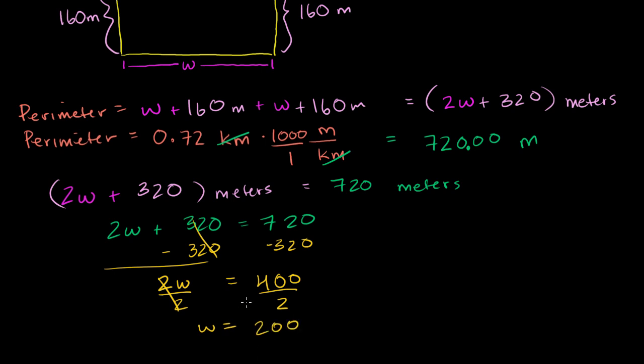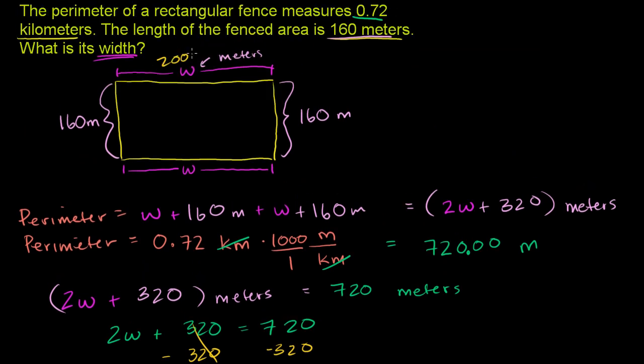And we said that w was in meters, so the width is 200 meters. So let's see if it makes sense. 200 plus 200 is 400, plus 320 is 720. So the total perimeter is 720 meters, which is the exact same thing as 0.72 kilometers.